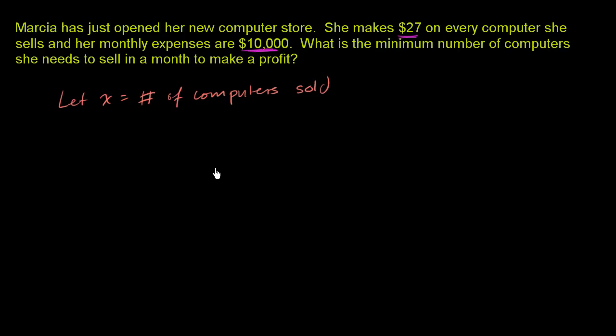Now let's think about how much net profit she will make in a month. How many computers, the minimum number she needs to sell in order to make a net profit. Her profit is going to be how much money she brings in from selling the computers. She makes $27 on every computer she sells, so her profit is going to be $27 times the number of computers she sells. She gets $27 per computer times the number she sells.